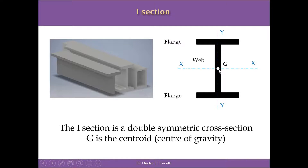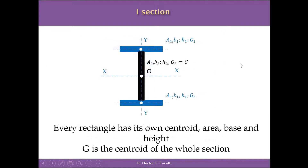The centroid is easy to locate because of the double symmetry: it is at half the base and half the height, that is the location of G — also known as the center of gravity in some texts. The I-section is composed of three rectangles: two flanges (shown in blue) and the web (shown in black). Each has an area, a base, a height, and a centroid. The centroid of the whole I-section coincides with the centroid of the web due to the double symmetry.